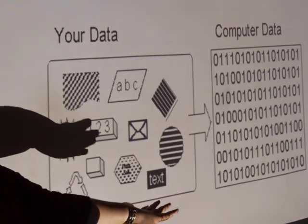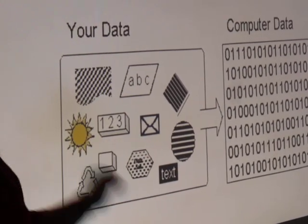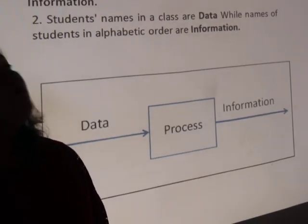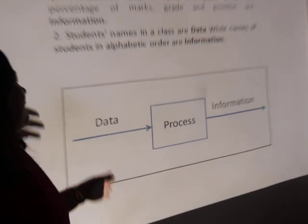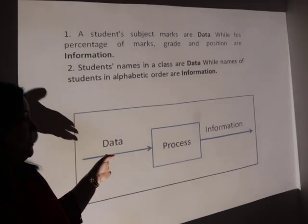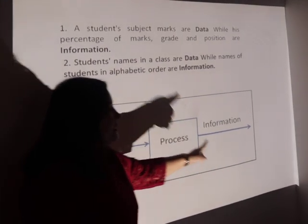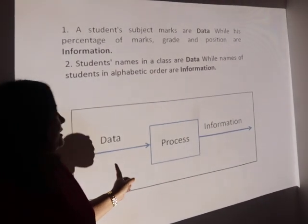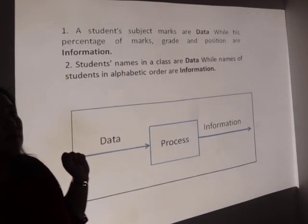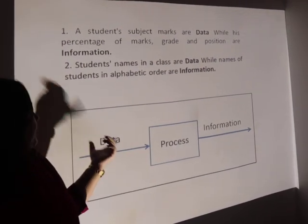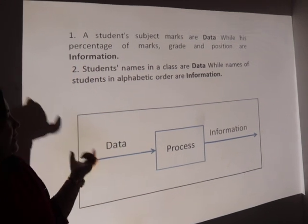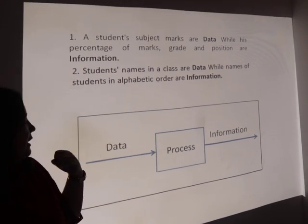The next topic is information. Data is basically the input. Information is the processed data — that is, the output that is produced by the computer. Let's see some examples to understand the difference between data and information.